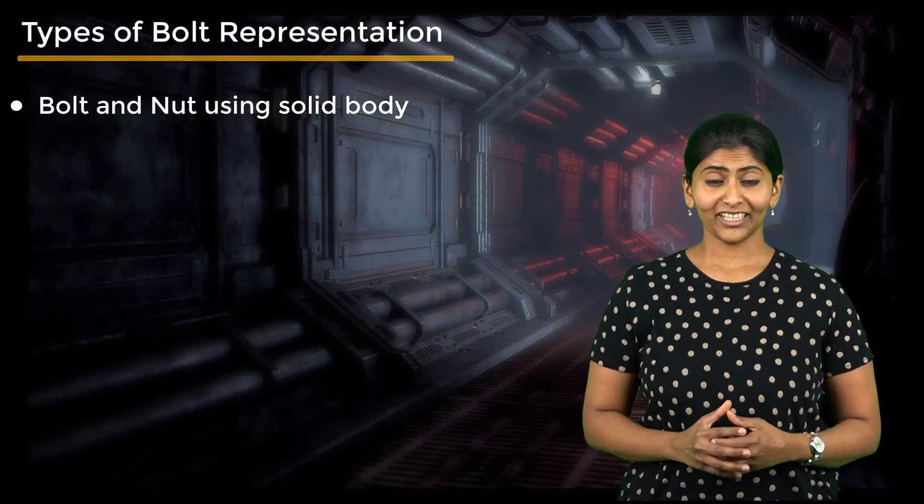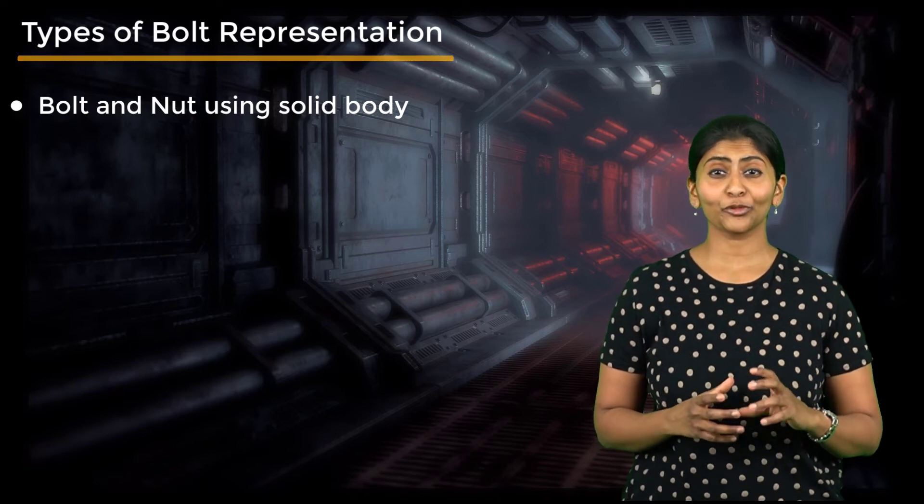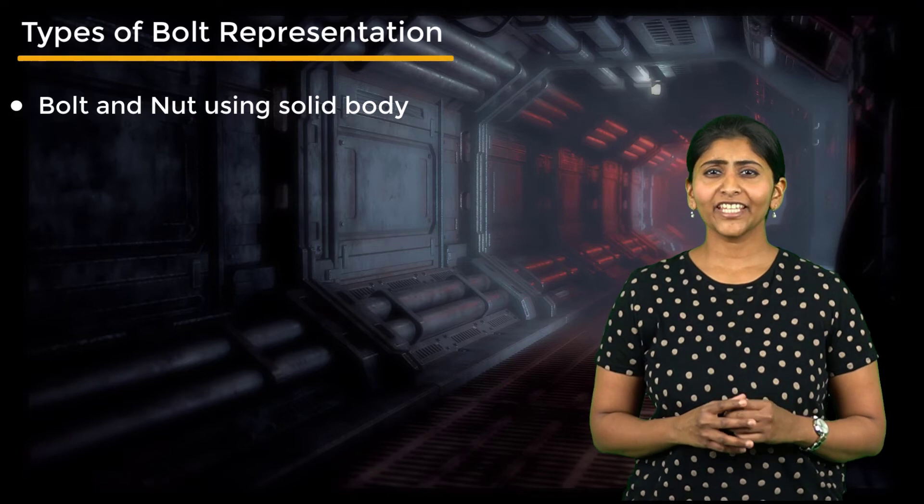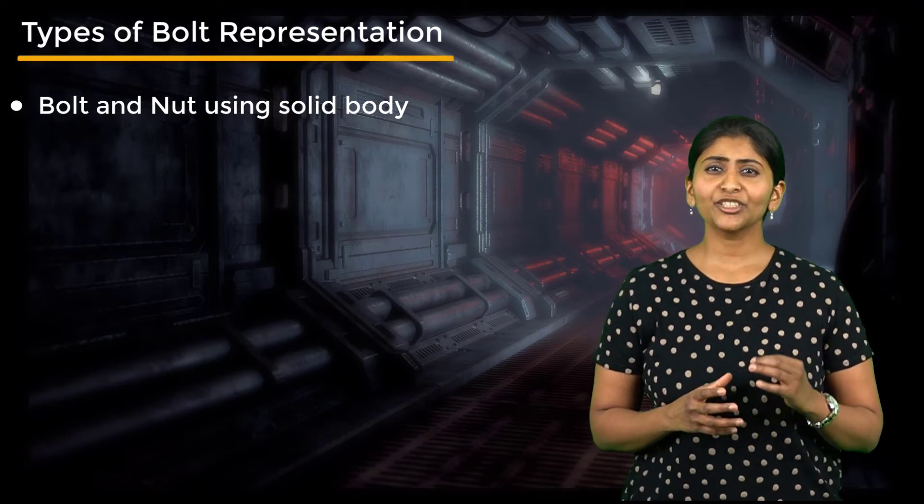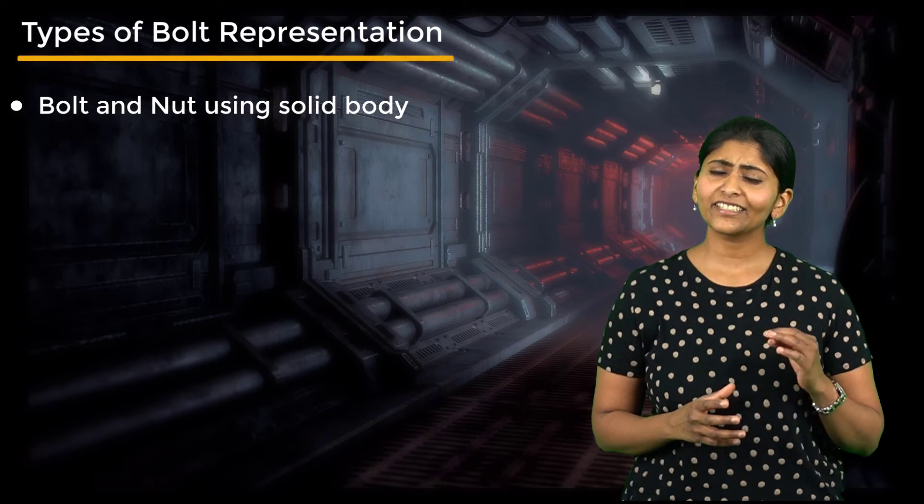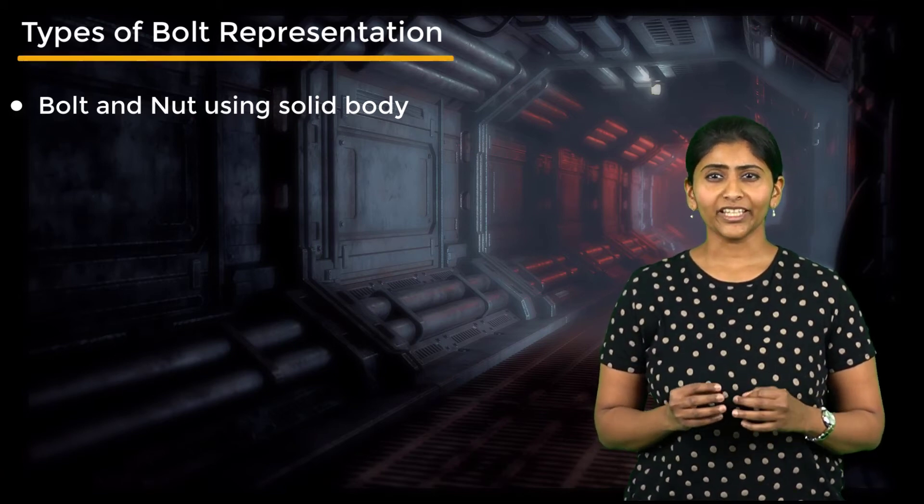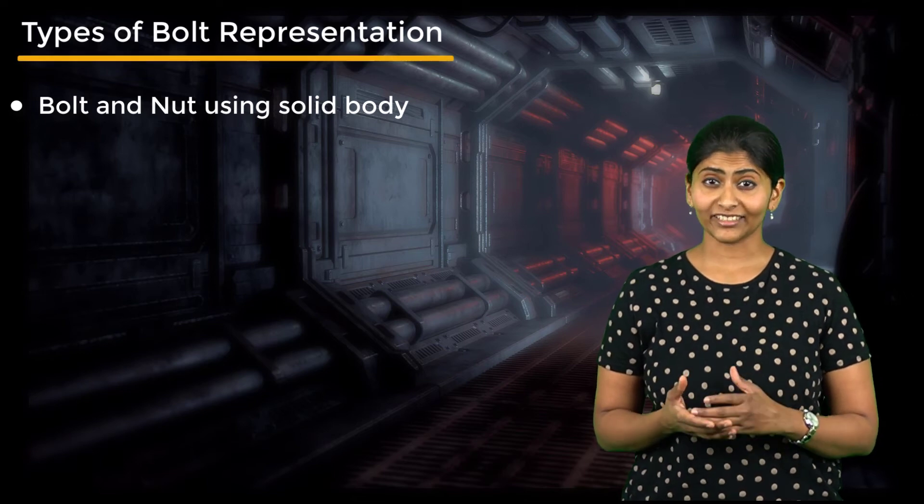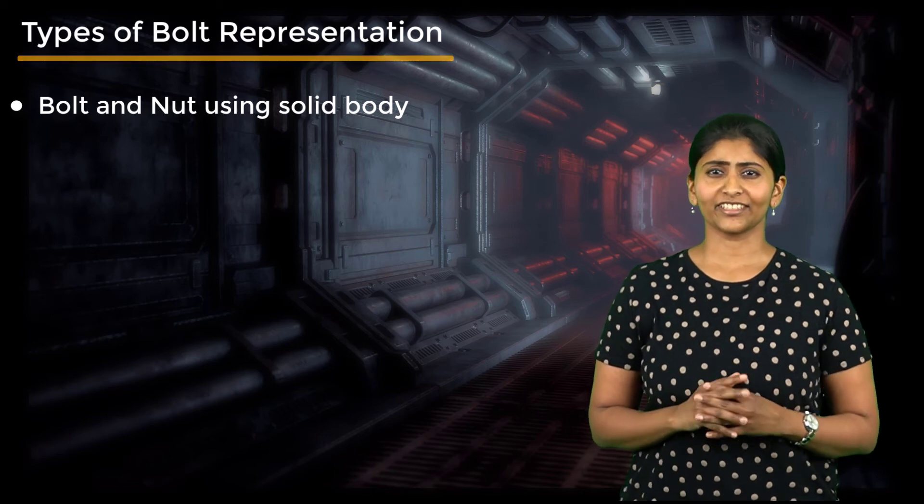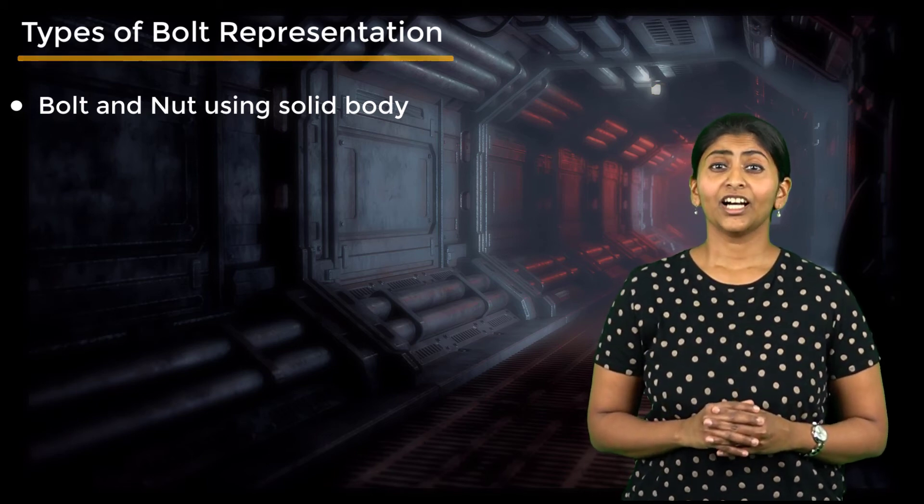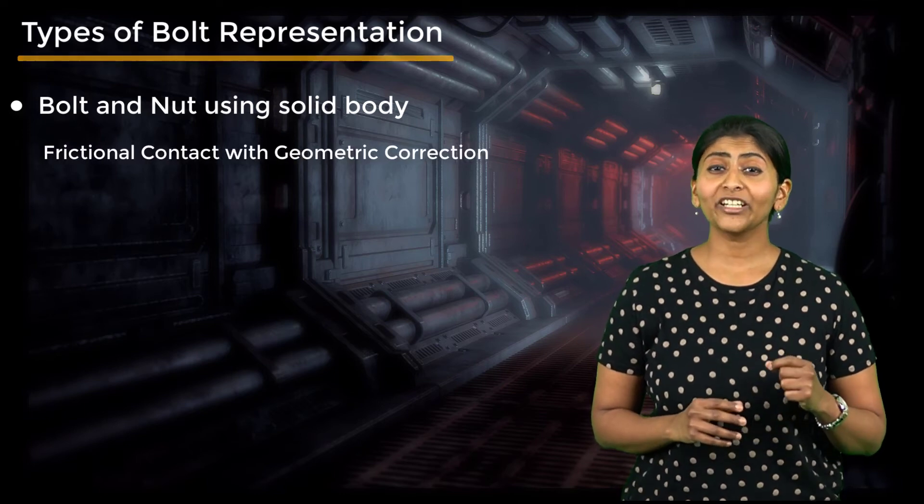In some cases, we may want to calculate stresses in the threaded portion of bolts. But if we include the thread geometry, the number of nodes required to mesh the bolt increases tremendously. So we want to find a way in which we can calculate the stress in the threaded portion, but not increase the number of nodes drastically. The solution to this problem is to use geometry correction.